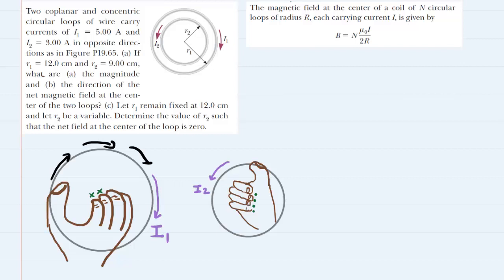That means that at the center of the loop, because your fingers are curling into the screen, the magnetic field will also be pointing into the screen. The fingers show the direction of the magnetic field. So for the first loop we can say that the magnetic field B1 will be pointing into the screen.